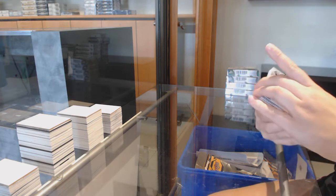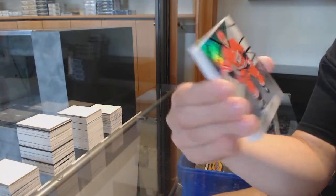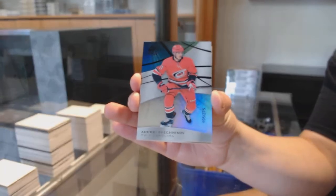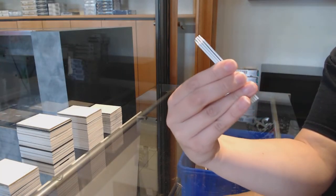We've got number 295 rainbow for the Chicago Blackhawks, Dominik Kubelik. Number 275 rainbow for Carolina of Andre Sveshnikov. Wowza, that's pretty.